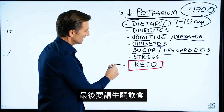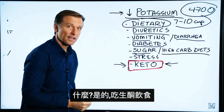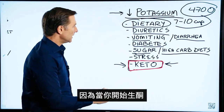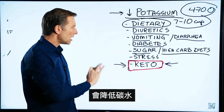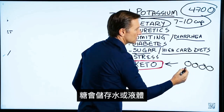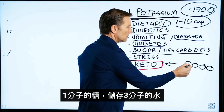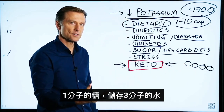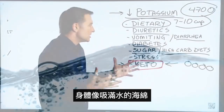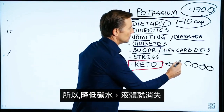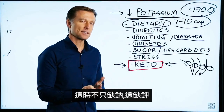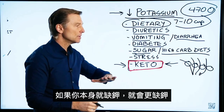Lastly, going on a ketogenic diet can cause your body to require more potassium. When you go on a ketogenic diet and lower your carbs, you don't need the quantity of stored sugar anymore. Sugar actually stores water — one sugar molecule will store almost three molecules of water. So the more sugar and glycogen you have, the more fluid you're retaining, like a sponge. When you cut down the carbs, you lose the fluid. And because sodium and potassium work together, you're going to lose not just sodium but also potassium, ending up with a lower amount. If you were already deficient in potassium, you'll be even more deficient.